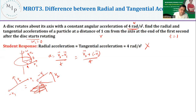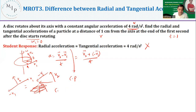Taking this resultant vector and placing it on the diagram, you see it is directed toward the center of the circle — along the radius. This is your radial acceleration, also called centripetal acceleration. Centripetal force is mv²/r, so centripetal acceleration is v²/r.